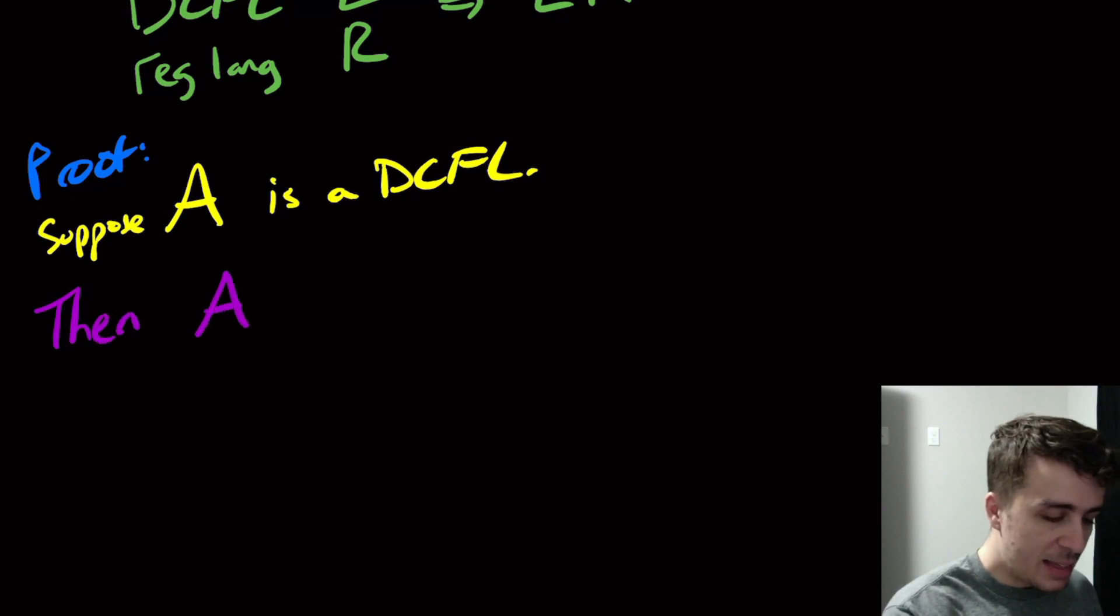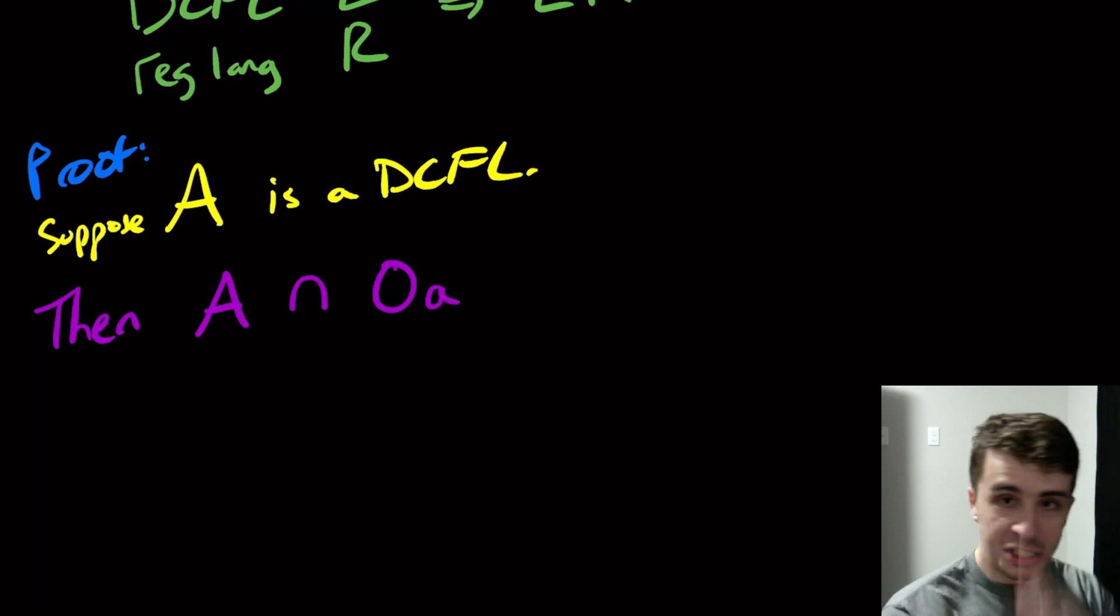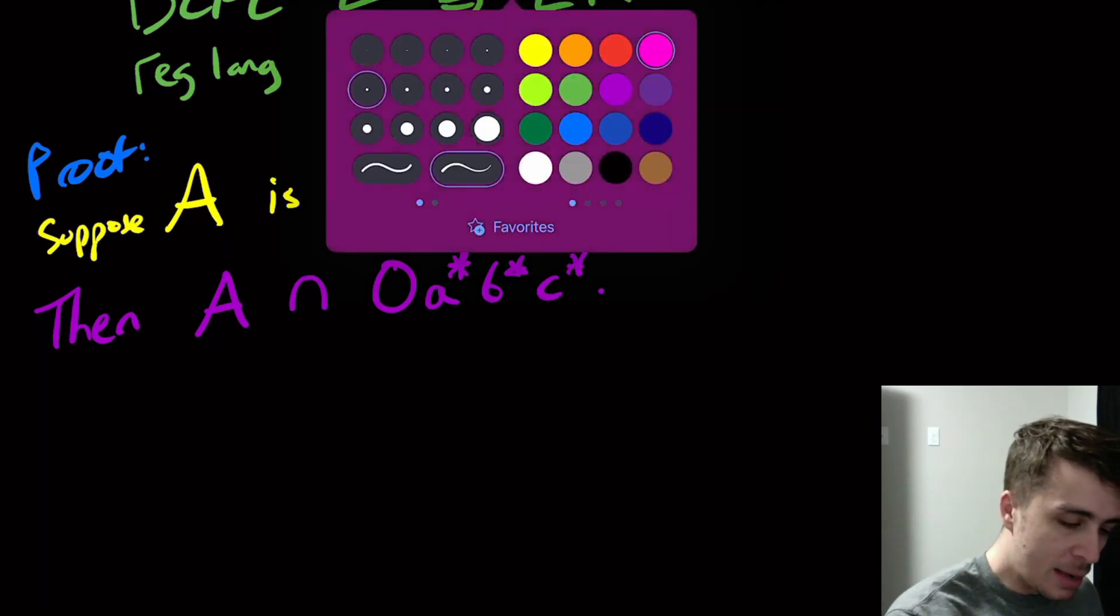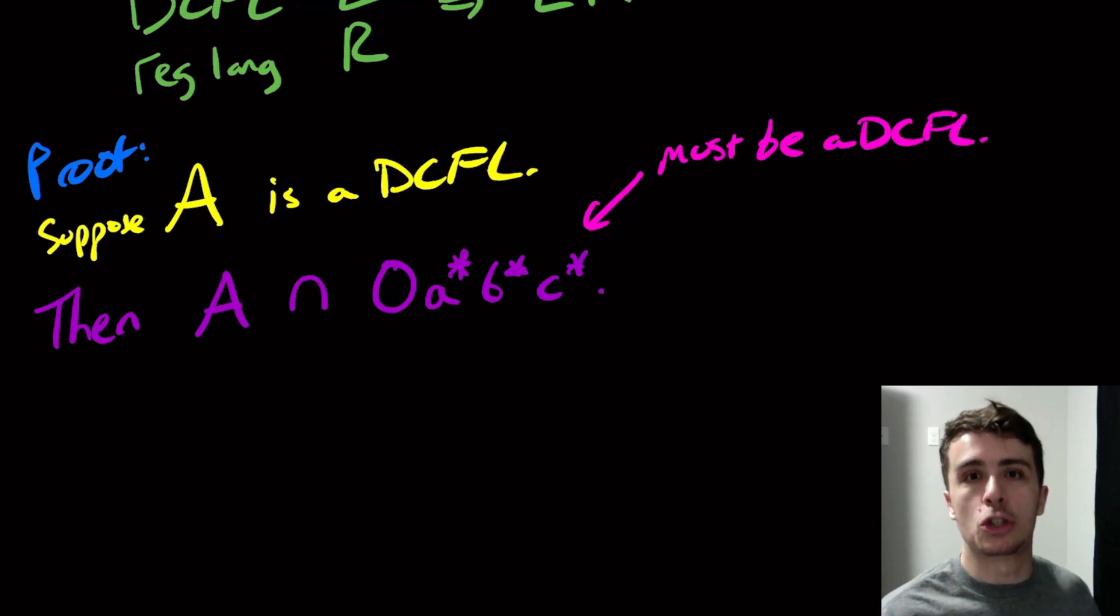So then what I'm going to do is I'm going to take this language A, and I'm going to intersect it with a regular language. And the regular language in this particular case is going to be 0, so a single zero, no star on it, A star, B star, C star. And one thing that we can immediately see is that this thing must then be a DCFL, because DCFLs are closed under intersection with regular languages. That is true. And the reasoning for that is, if you take a DPDA and a DFA, then you can do a product type construction off of them, because they're both deterministic. And because the DFA corresponding to the regular language doesn't do anything with the stack because it doesn't have one, we don't have to worry about it.